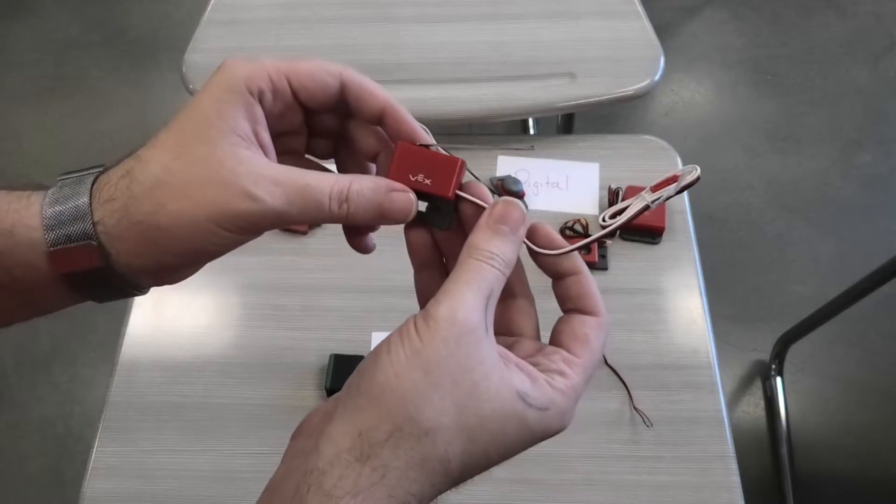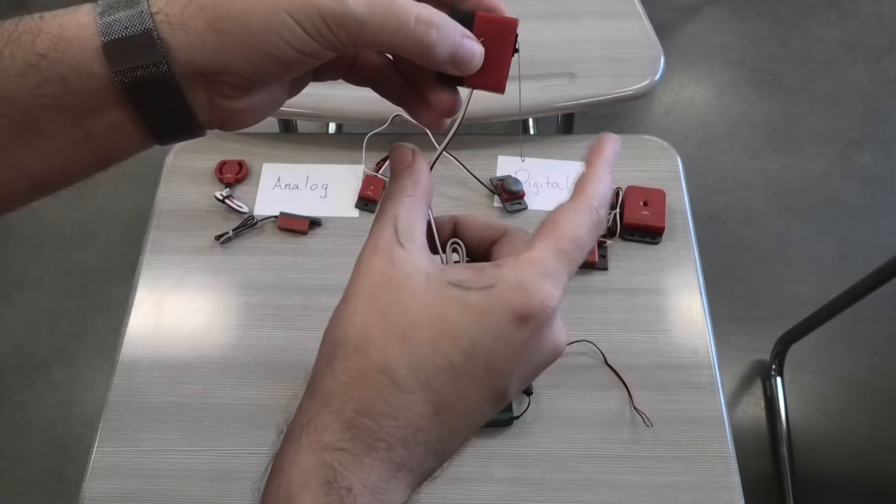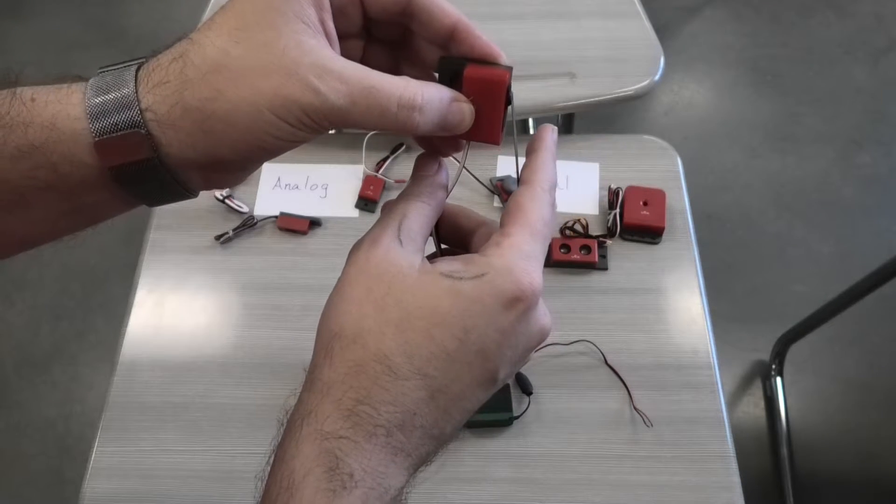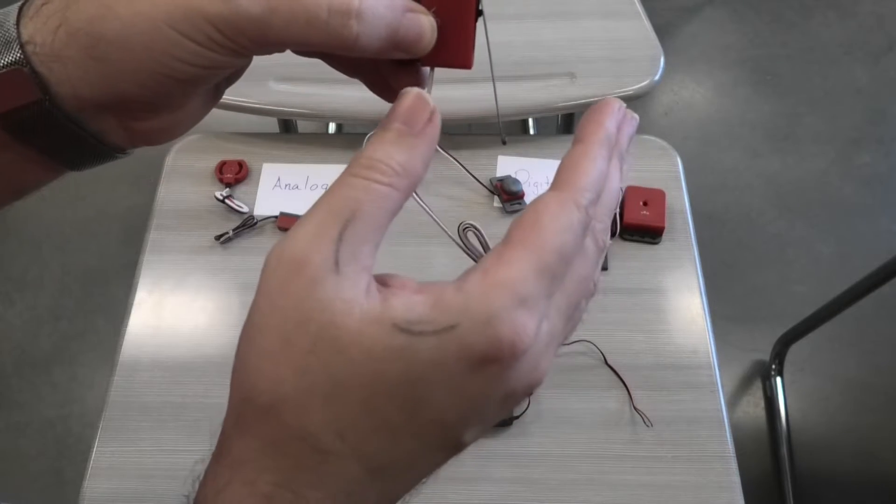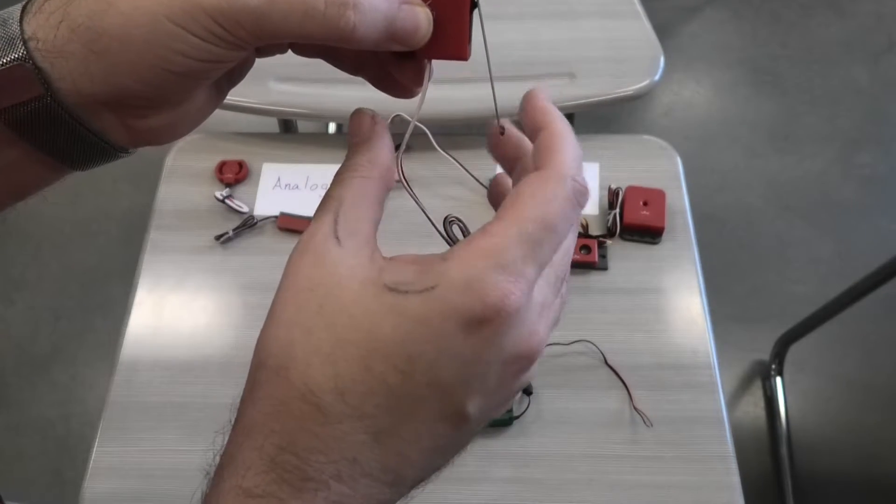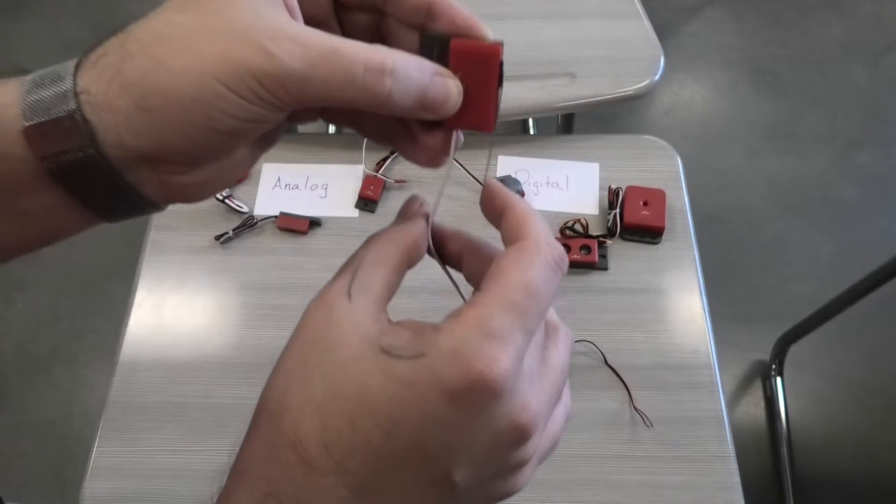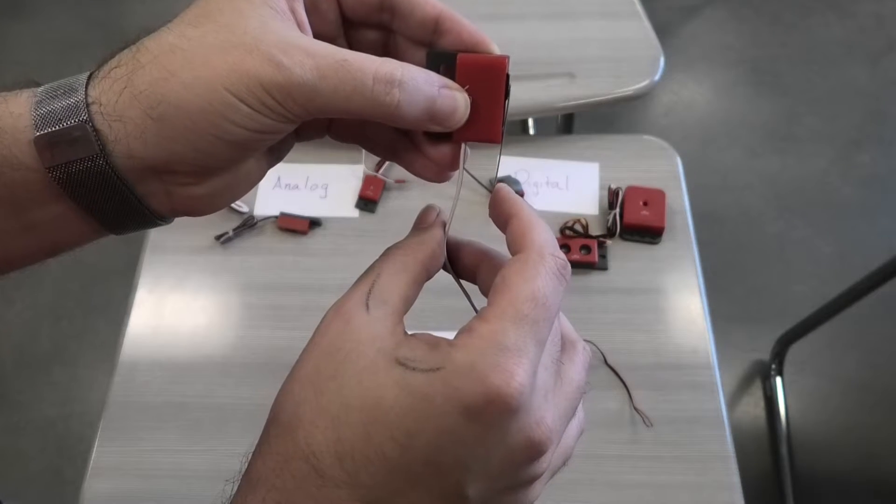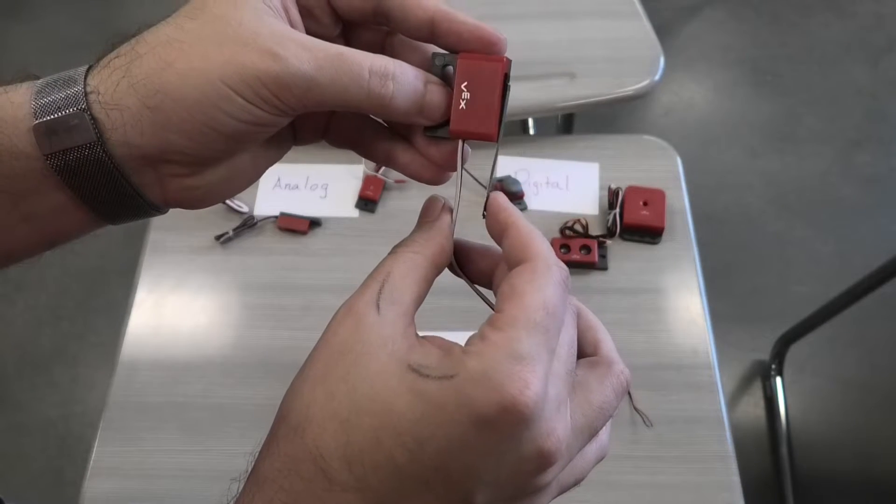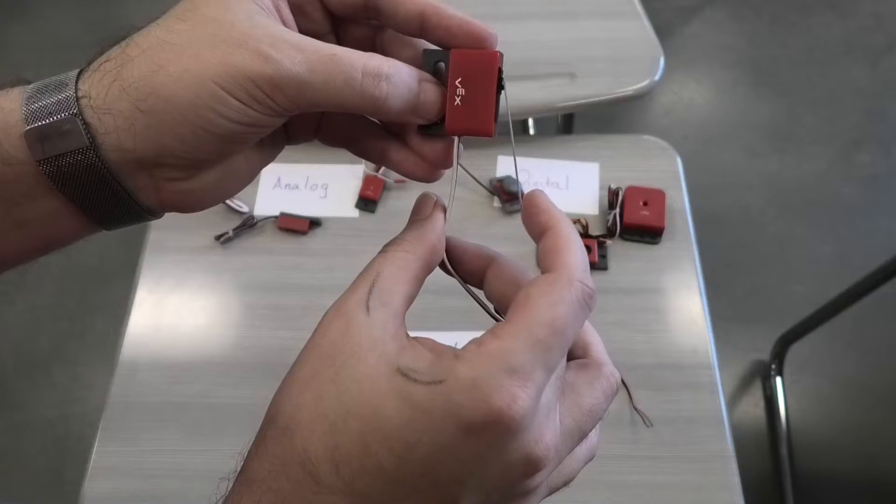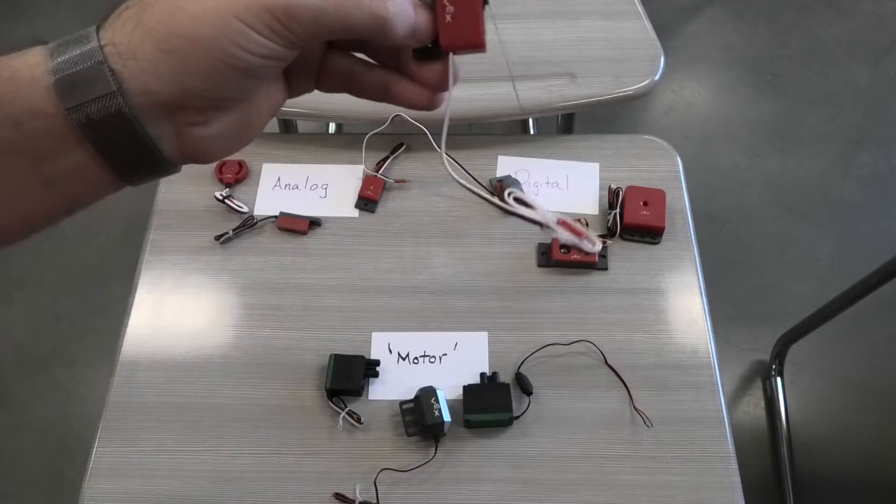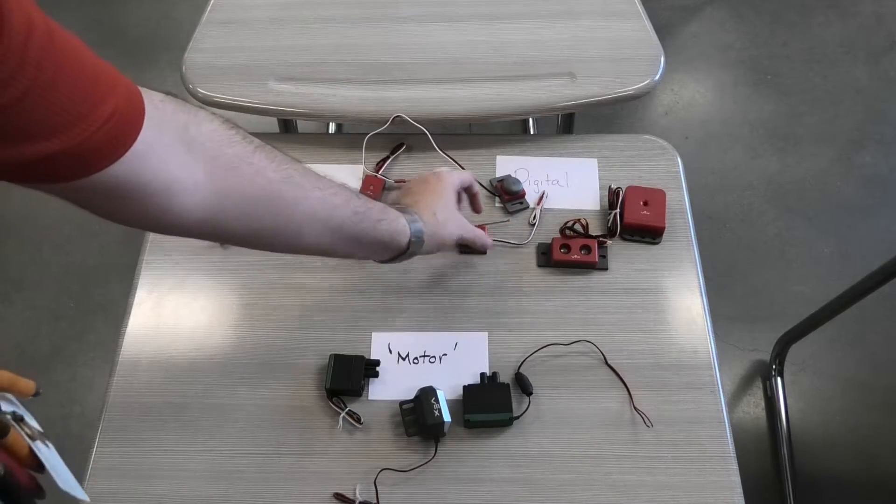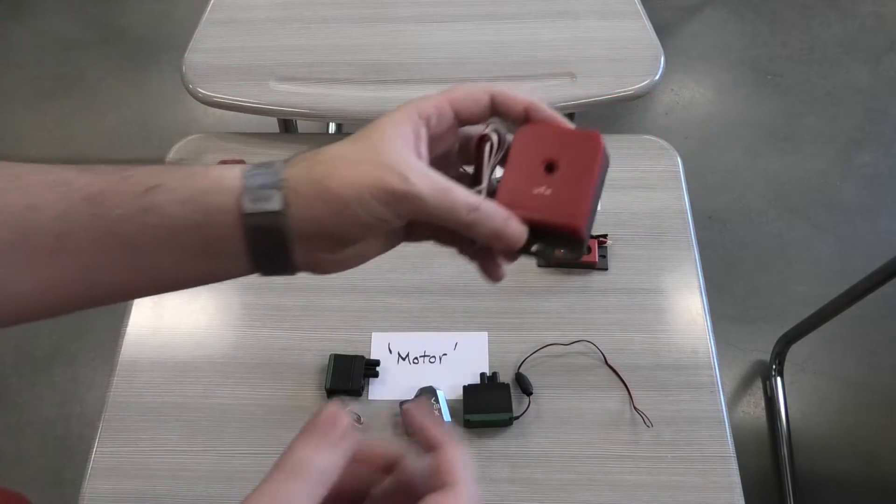The exact same thing, just built a little bit differently, is the limit switch. A limit switch works by having something try to press up against it and it makes that clicking sound. You can have this programmed to either be on or off. There are only two versions here—there is no in-between value. When you hear that click, that's the difference between one and zero, on or off. That's another digital switch.